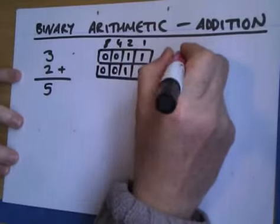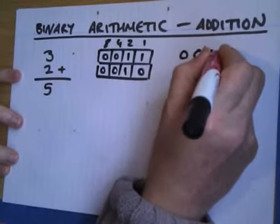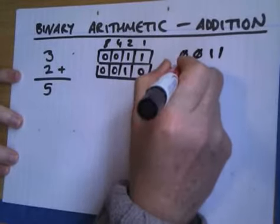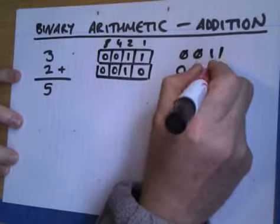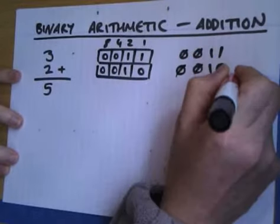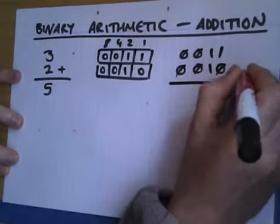So we've got 0, 0, 1, 1 plus 0, 0, 1, 0. That's 2.